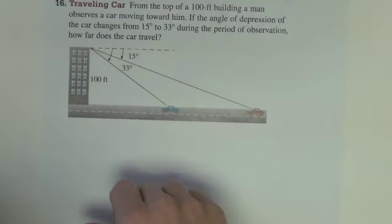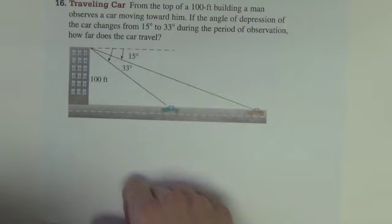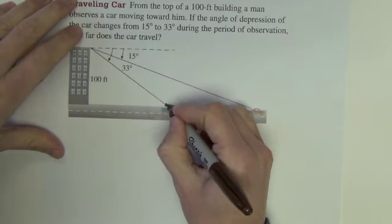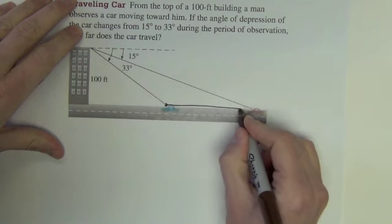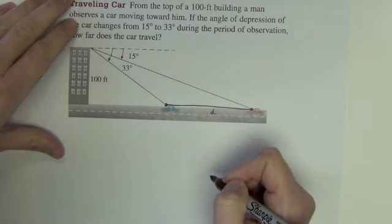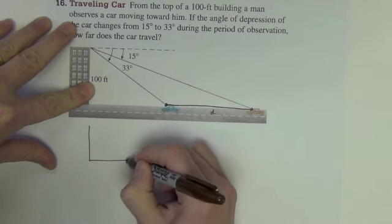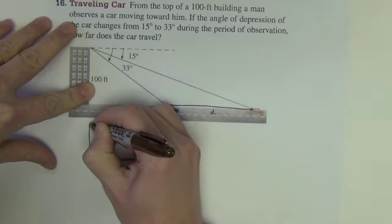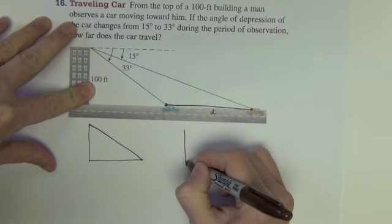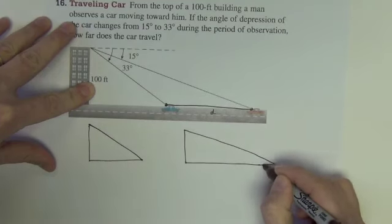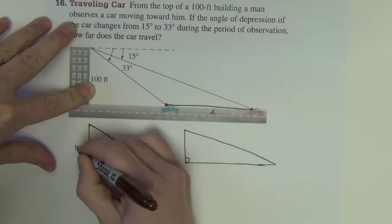Okay, from the top of a 100 foot building a man observes a car moving toward him. If the angle of depression of the car changes from 15 degrees to 33 degrees during the period of observation, how far does the car travel? So we are trying to find the distance here that the car has traveled. We will call it D. Okay, so again we are going to use a couple of right triangles to do it. Here is the building to the blue car and on up. Here is the building all the way out to the car in red.